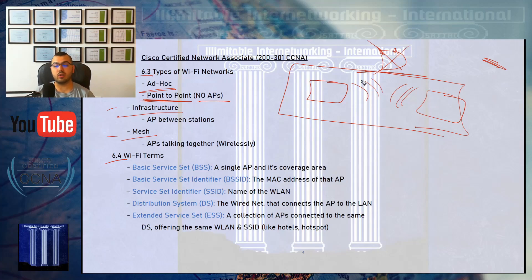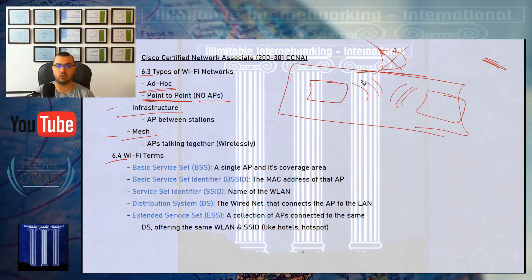I think Bluetooth can be involved as an ad hoc example, because you can have two stations like a mobile phone and a laptop that send information between them using Bluetooth — a wireless connection that requires no access point. Bluetooth does use the 2.4 GHz channels, which are considered Wi-Fi channels, so I think Bluetooth is considered ad hoc. I need to search further about that.